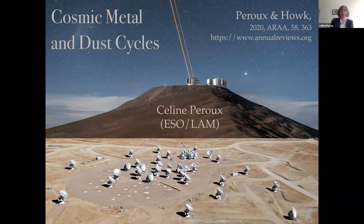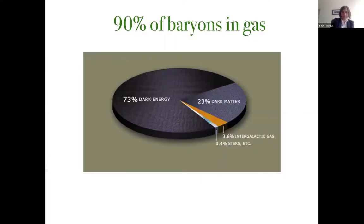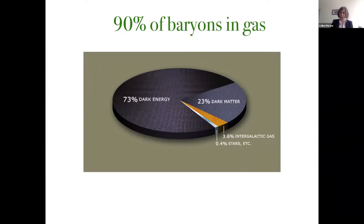Thank you very much for the invitation to talk about some of this work published in the Annual Review last year in collaboration with Chris Hawke. I'd like to start by reviewing what are the different constituents of the universe. Many of us try to understand the dark energy and dark matter components, but even the remaining so-called normal matter is still poorly understood. Only 10% of the baryons are in stars; the remaining 90% are part of the so-called intergalactic gas, which is the focus of today's presentation.